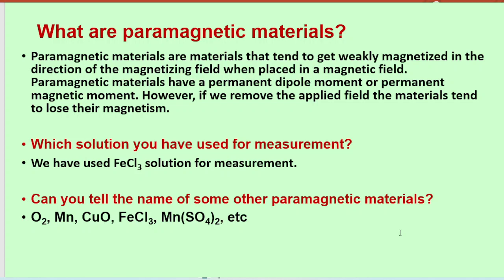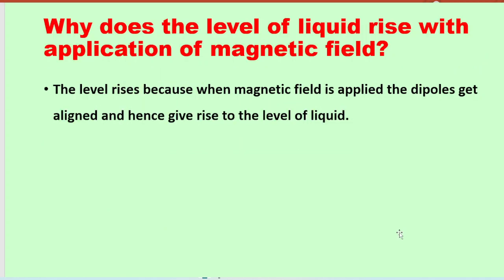Other examples of paramagnetic materials include manganese, oxygen, cupric oxide, and manganese sulfate. Why does the level of liquid rise with the application of a magnetic field? The level rises because when we apply a magnetic field, the dipoles get aligned, and that is why we get a rise in the level of the liquid.